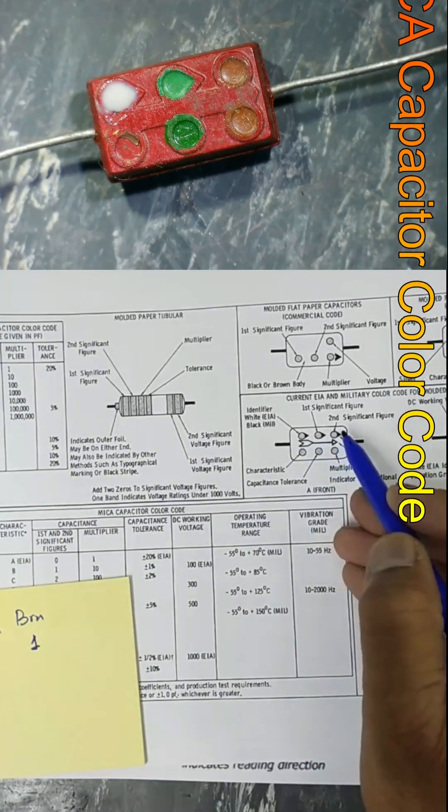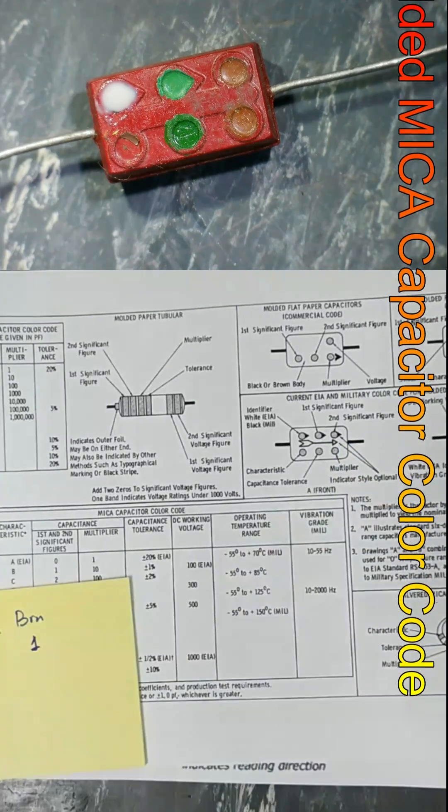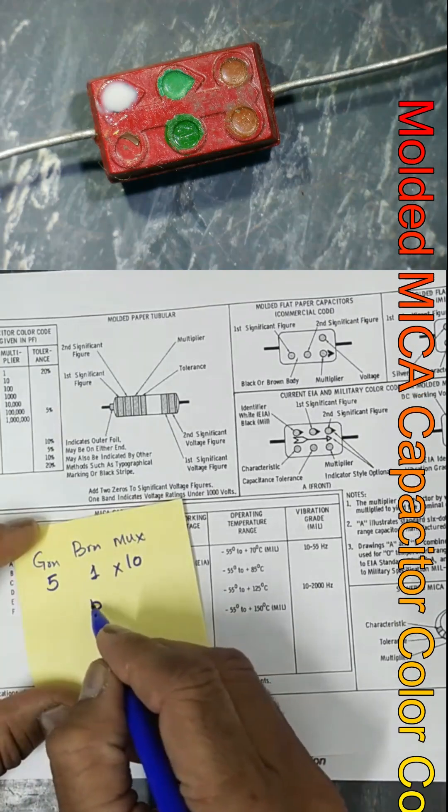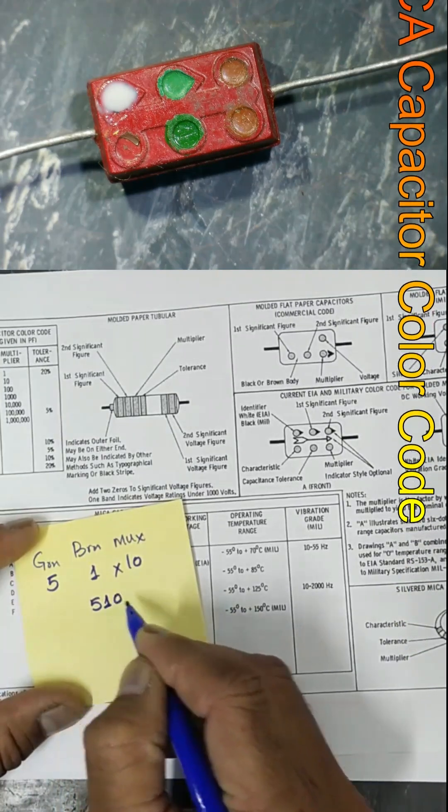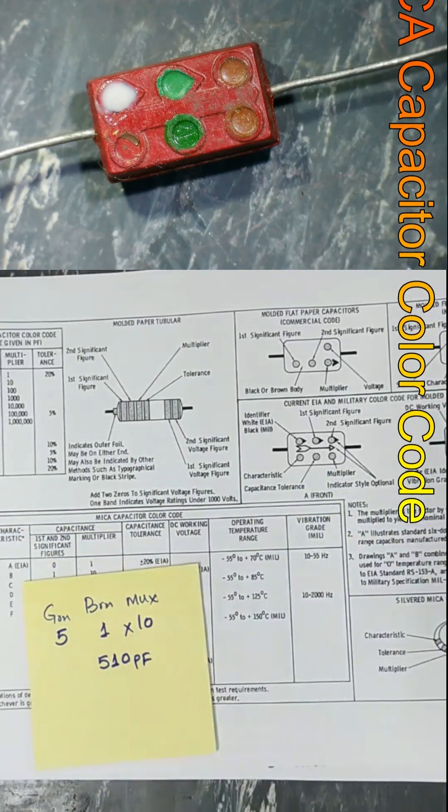The multiplier is also brown, multiply by 10, giving us 510 picofarad. Then this band is the tolerance, which is green, plus or minus five percent.